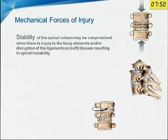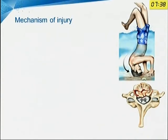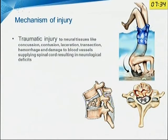What is the cause of injury? The stability of the spinal cord may be compromised when there is injury to the bony elements and disruption of the ligaments, resulting in spinal instability. This loss of stability results in traumatic injury to the neural tissues, resulting in concussion, contusion, laceration, transection, injury to the diameter vessels, and damage to the spinal cord resulting in neurological deficits.